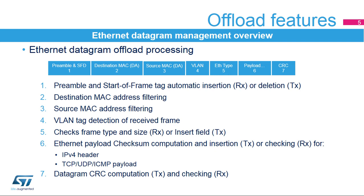VLAN-tagged frames are supported, and received frames are signaled to the host after VLAN tag comparison. Payload is composed of data from transport or Internet layers. The checksum is computed or checked for IPv4 headers and TCP, UDP, or ICMP payload. Finally, the CRC is computed for the whole datagram without taking into account the preamble and the start-of-frame tag.